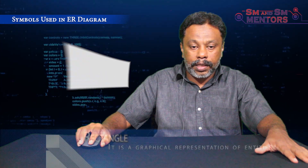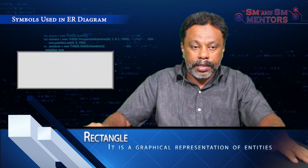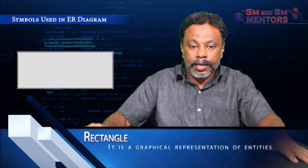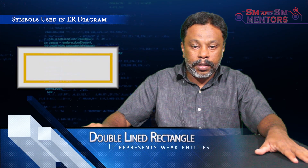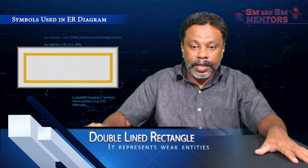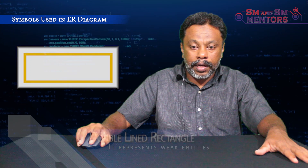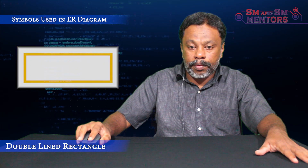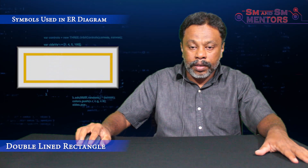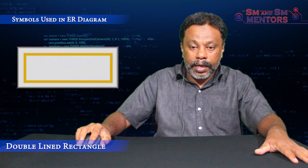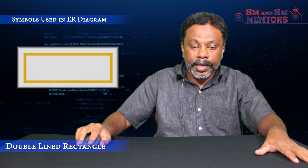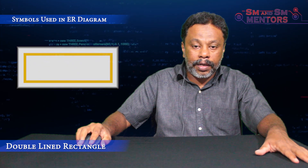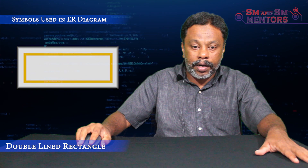The first symbol is the rectangle, which represents an entity. The second is the double-lined rectangle, which represents a weak entity. We call an entity without a key attribute a weak entity, and it is represented by a double-lined rectangle.